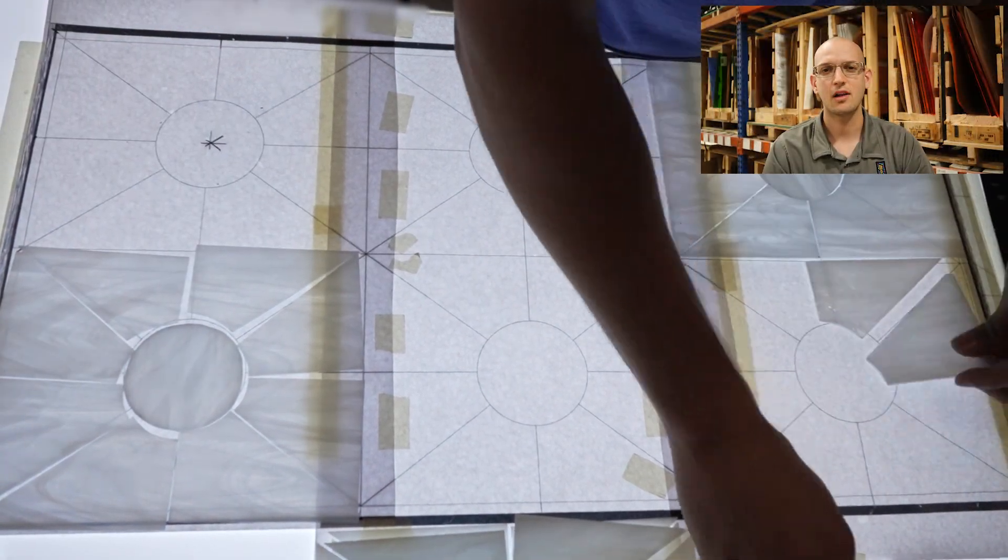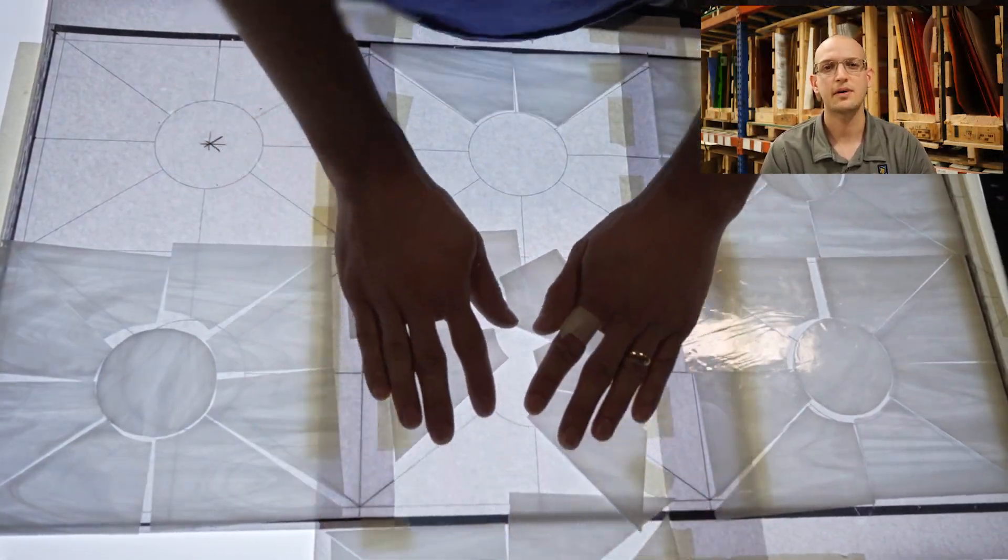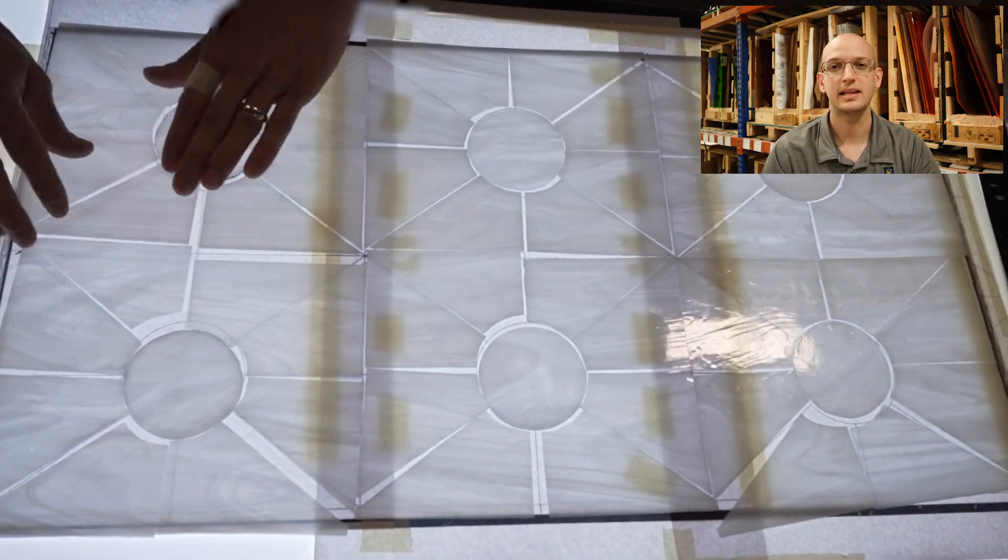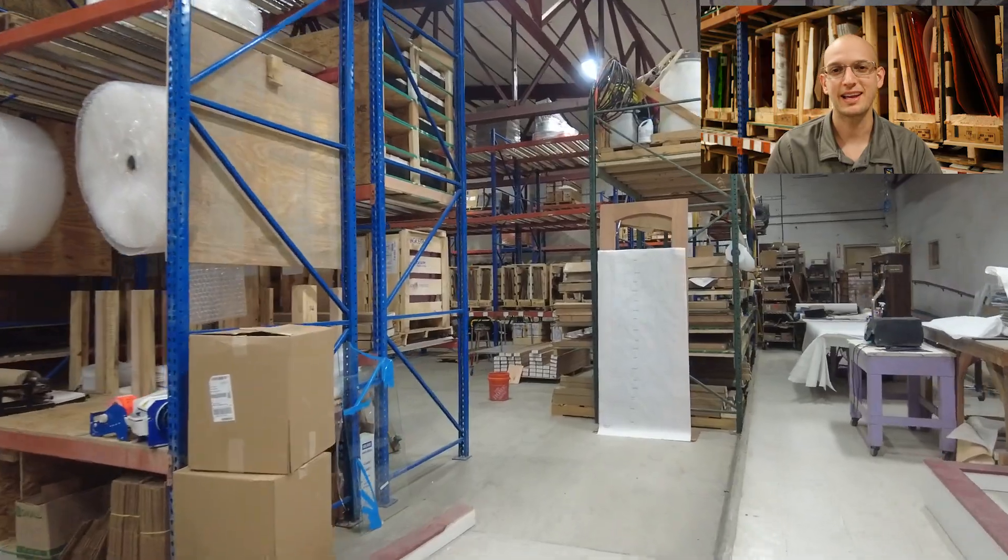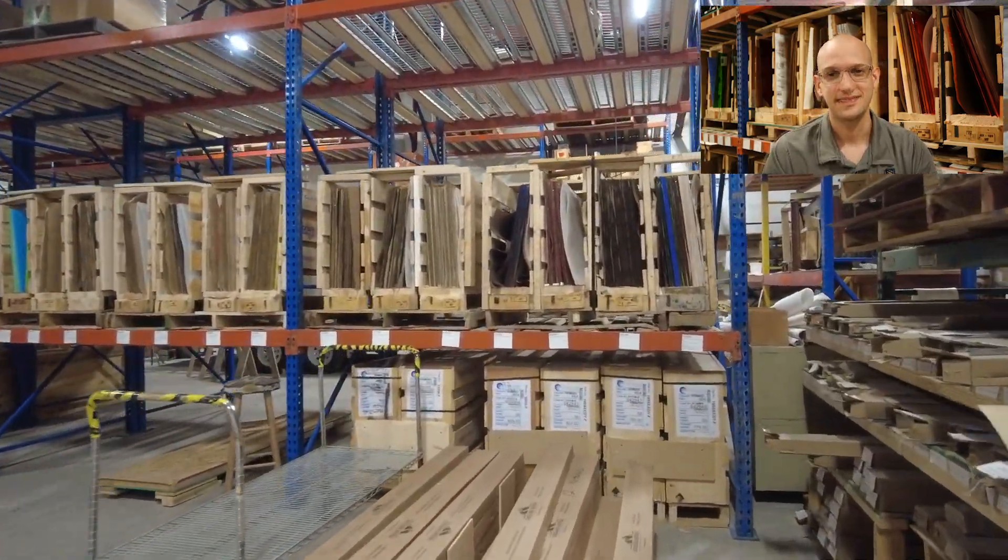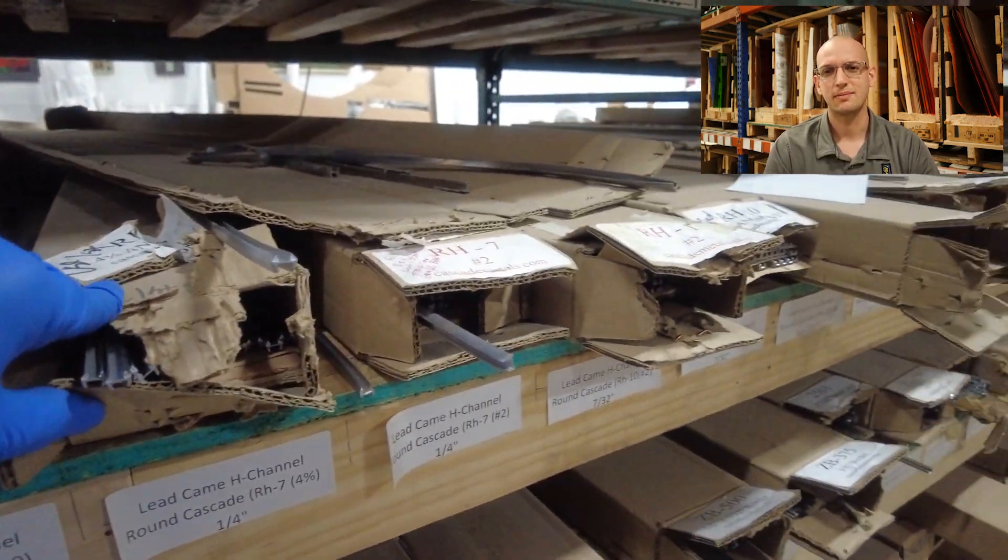Now that we have all our pieces cut, we can place them on the pattern in the correct spots. And we are now completely done with the cutting, as long as I don't break any pieces when leading the panel. You know how that is. Now, I'll waddle on over to grab some lead.